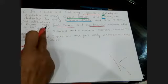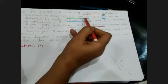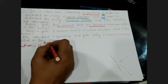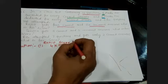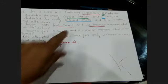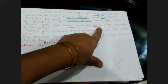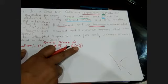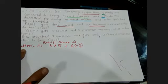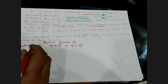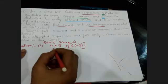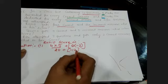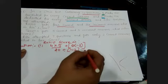Rohit's score: he attempted 4 correct questions, and for correct answers 5 marks are awarded, so 4 into 5 equals 20. He attempted 6 incorrect questions, and for incorrect answers 2 marks are deducted, so 6 into minus 2 equals minus 12. Then 20 plus minus 12 equals 8. His total score is 8 marks.